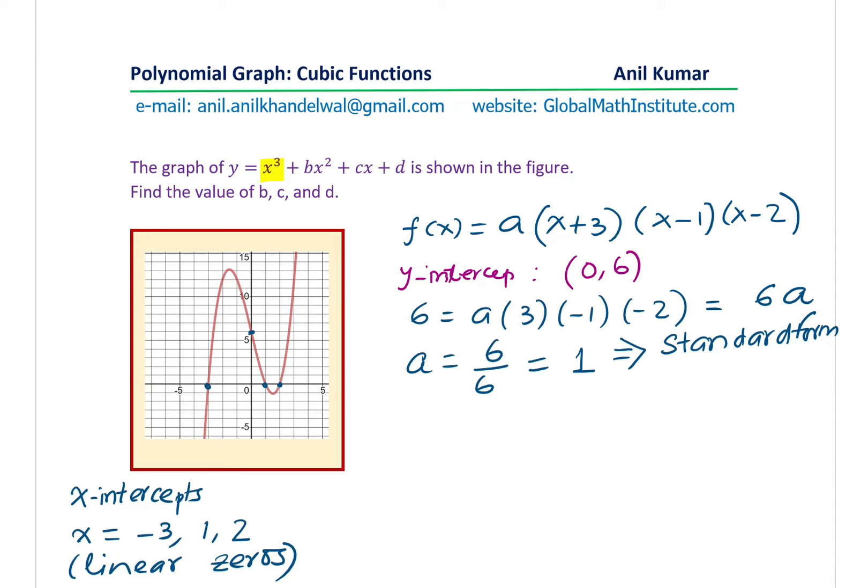So we'll expand this and we'll say f(x) is equal to, so we can take two factors at a time. So let's take these two factors, multiply, and then we'll use the third one.